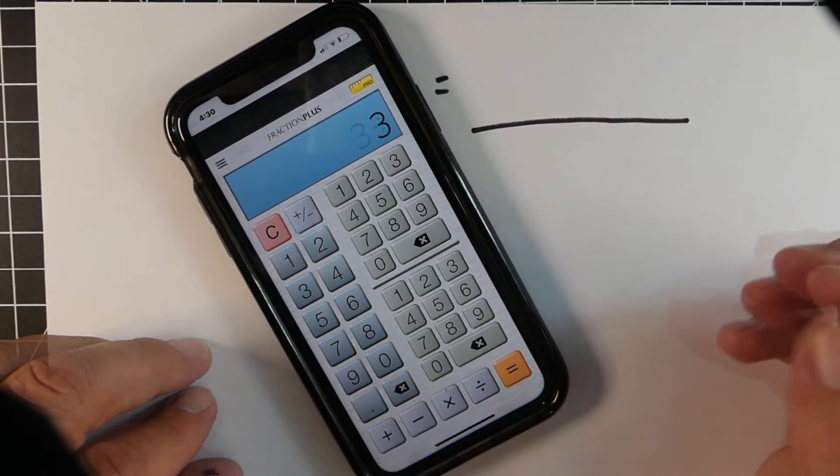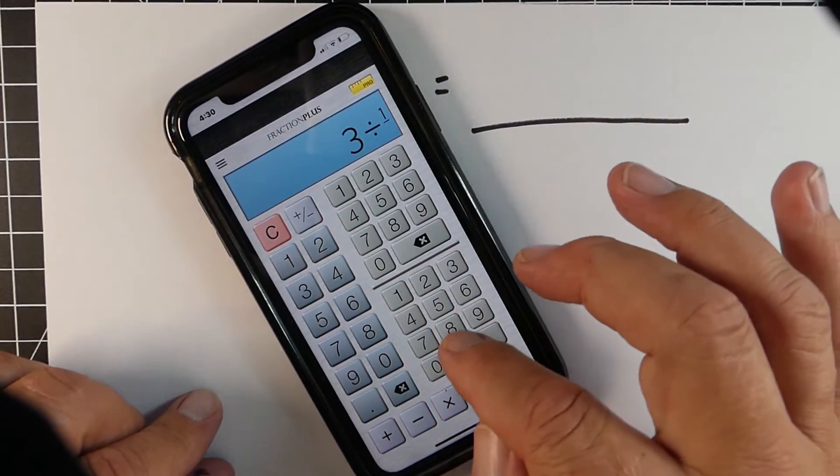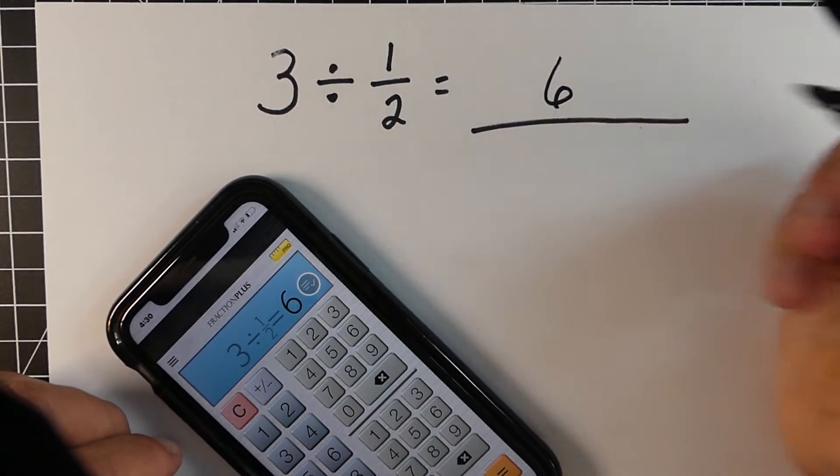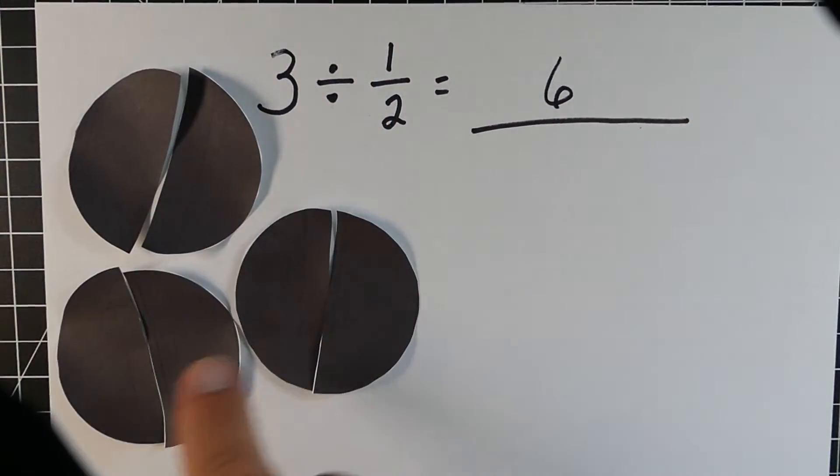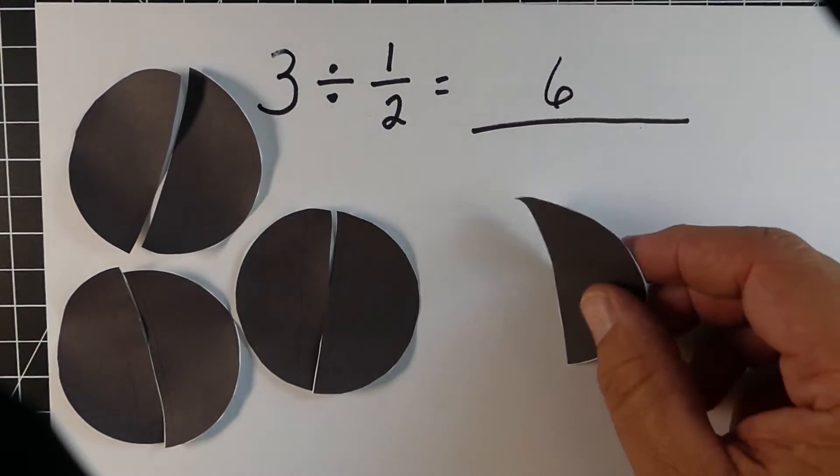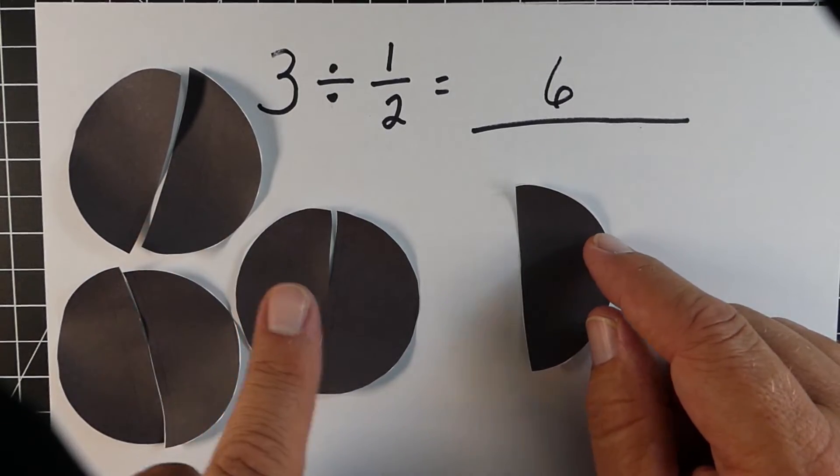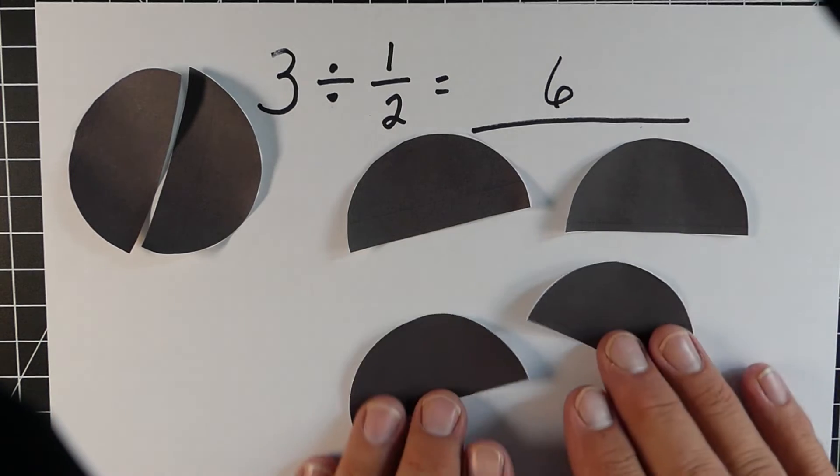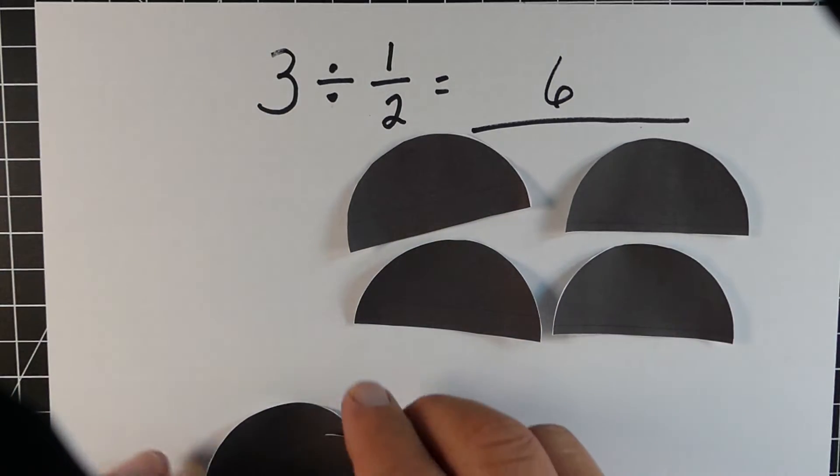And here's yet another one. If we take 3 and we divide it by 1 half, we end up getting 6, so positive 6. So again, here's our three circles. We've cut all these in half, so we're going to divide by half. And when I take 3 and I divide it by 1 half, I end up with 6.